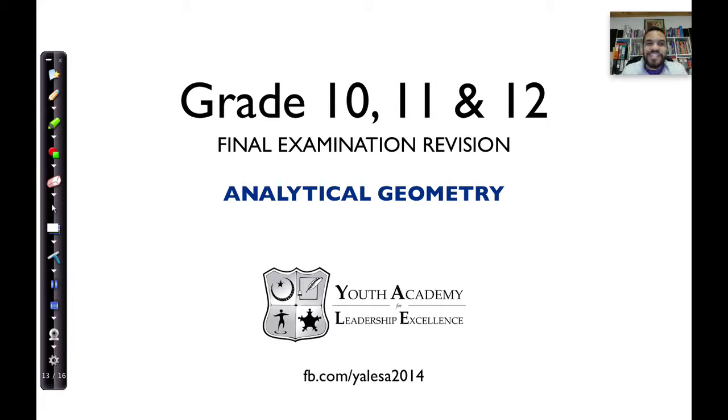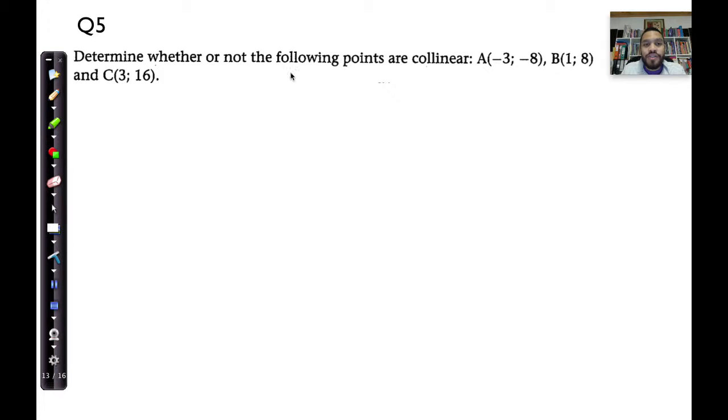Hello and welcome, and we are continuing with Analytical Geometry Revision. The next question is question number five, and it reads, determine whether or not the following points are collinear. Here's something we need to do. We need to start talking about what exactly collinear points are, right?